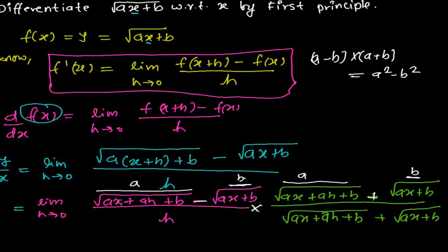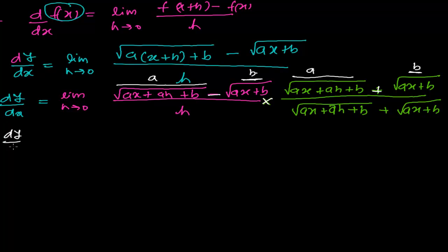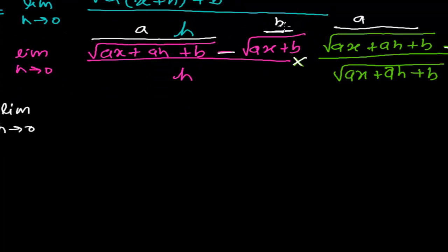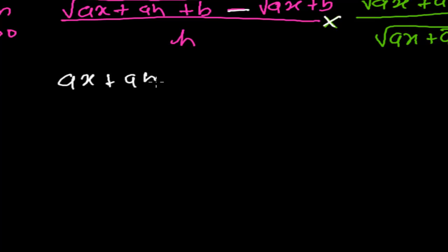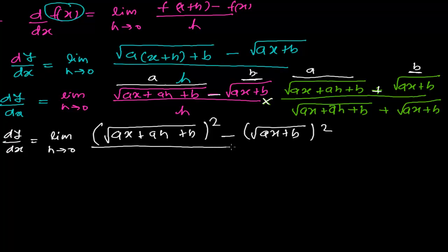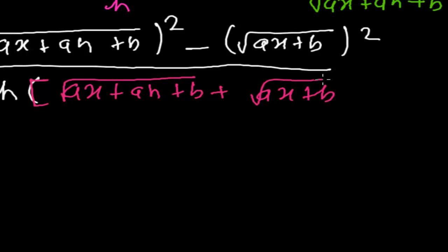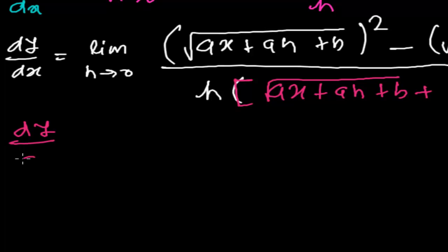By squaring, the square root cancels out. So dy by dx equals the limit as h tends to 0 of: root over ax plus ah plus b, whole squared, minus root over ax plus b, whole squared, all divided by h times root over ax plus ah plus b plus root over ax plus b.